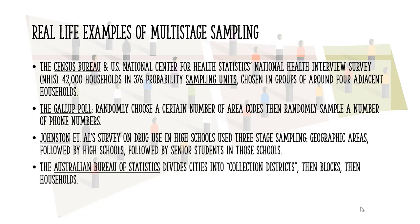Finally, the Australian Bureau of Statistics divides cities into collection districts, then blocks, then households. Each stage uses random sampling, creating a need to list specific households only after the final stage of sampling.